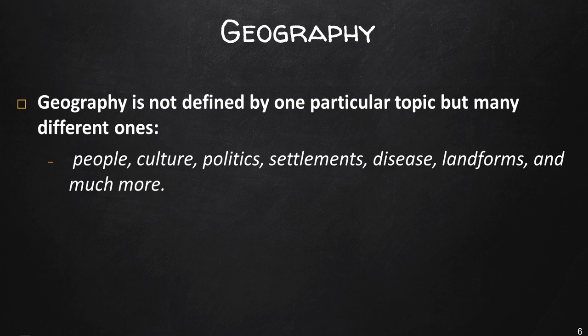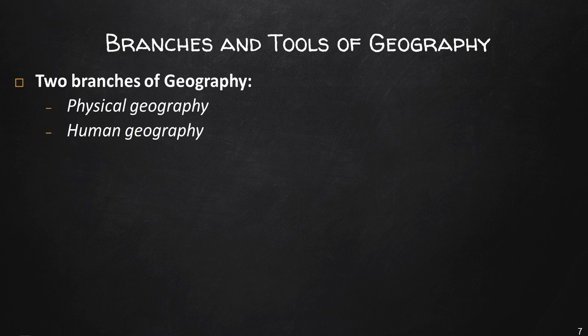Because geography is such a diverse subject matter, it is traditionally divided into two main groups. The discipline is divided into two main branches: physical geography and human geography. Each of these branches could be further divided into subspecialties, but we'll stick to these two main branches here.